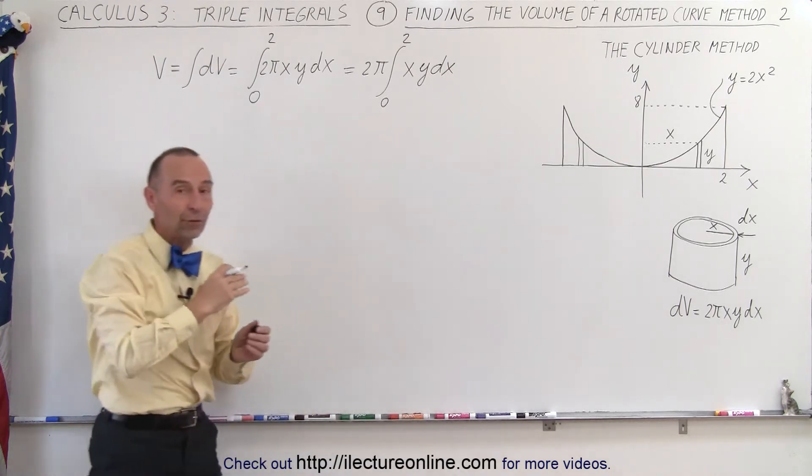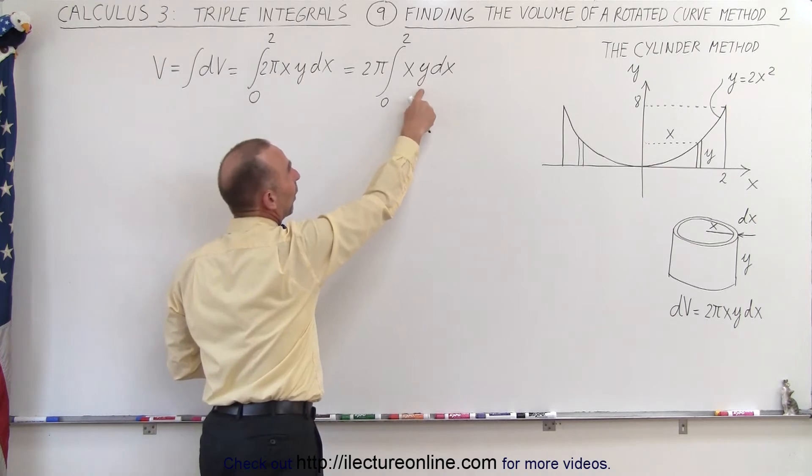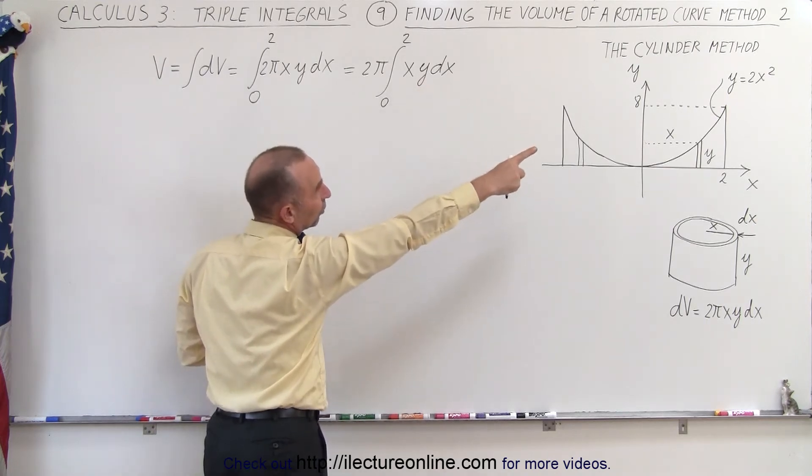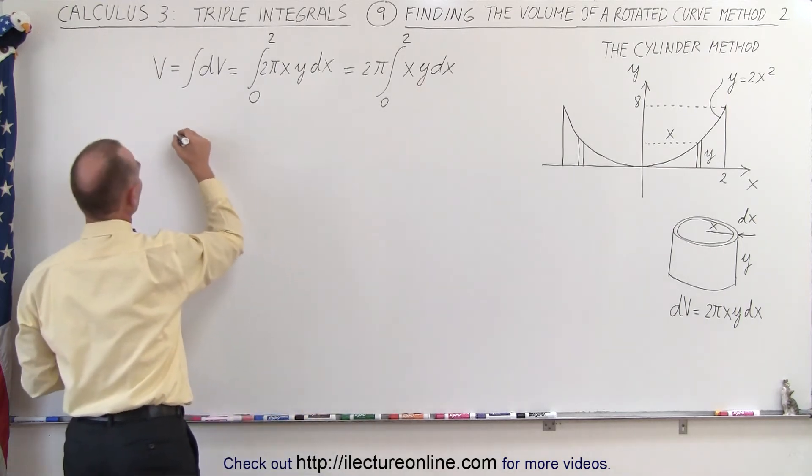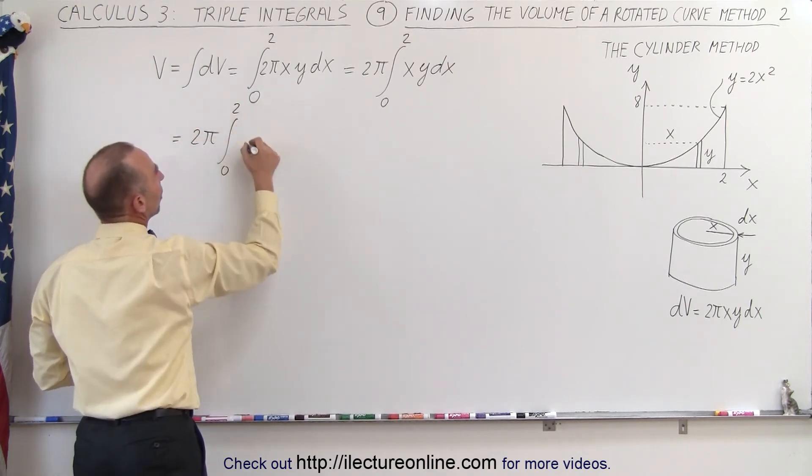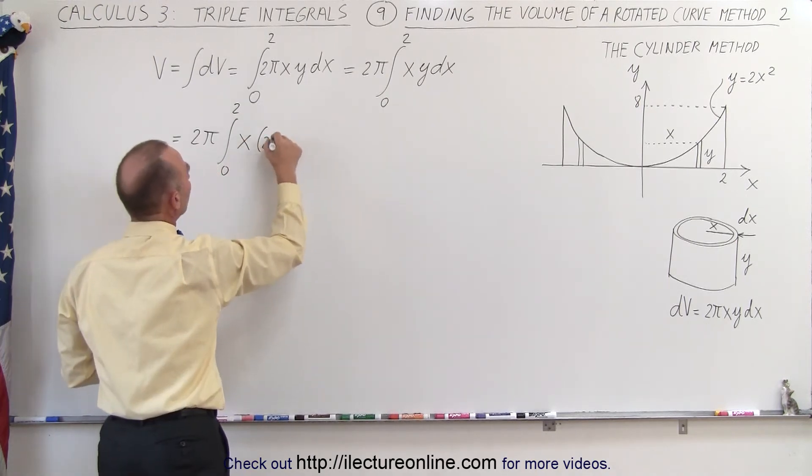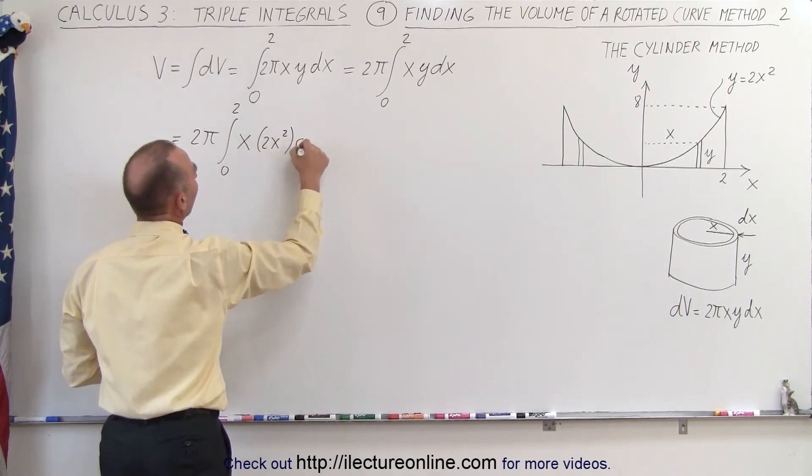Since I'm integrating over the x direction, I need a dx there, I need to replace the y by what y is equal to in terms of x, which is 2x squared. So, this can be written as 2 pi times the integral from 0 to 2 of x times y, and y is 2x squared times dx.